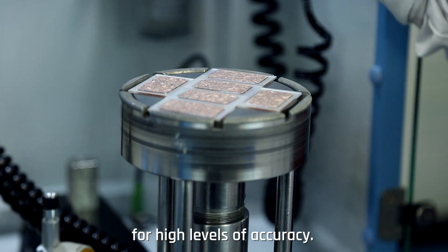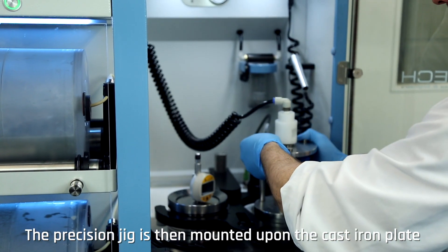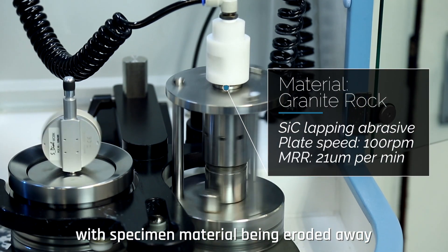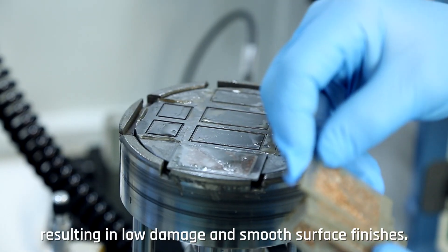The precision jig is then mounted upon the cast iron plate for machine lapping, with specimen material being eroded away resulting in low damage and smooth surface finishes.